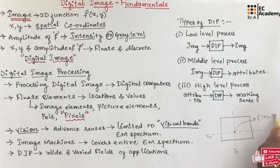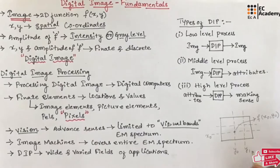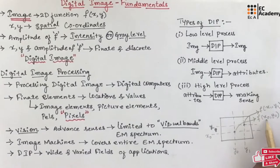In the same way, if we read along this y-axis and x-axis, if we call this as y1 and this x-axis as x1, then this point is known as f of x1, y1. Here, x0, x1, y0, y1 are known as spatial coordinates in a digital image.